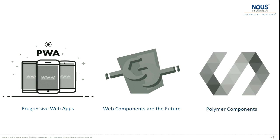Polymer — Google equally invests in Polymer as it does in Angular. All the websites you see on Google are built on top of Polymer. For example, your Gmail is built on top of Polymer.